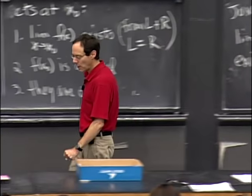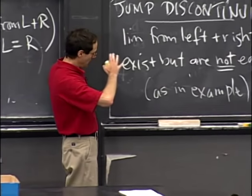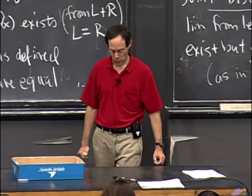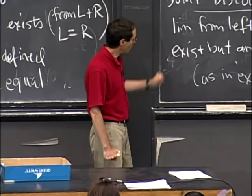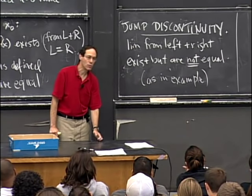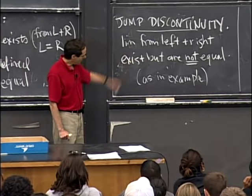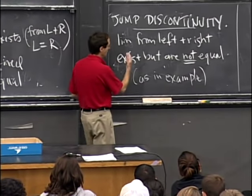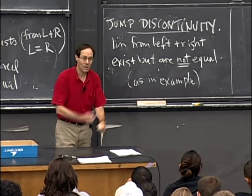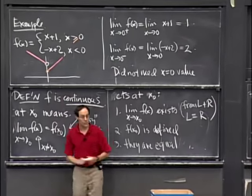Whether something is continuous may seem technical, but people have worried about it seriously. Bob Merton, a professor at MIT, worked on this for his Nobel Prize in economics — whether stock prices are continuous from the left or right in certain models. In that context, left is the past and right is the future, and it makes a big difference.